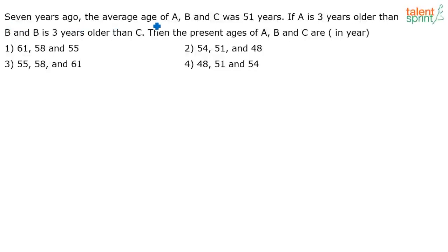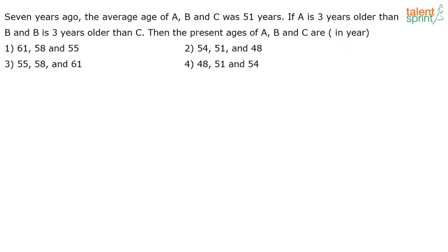7 years ago, the average age of A, B and C was 51 years. If A is 3 years older than B and B is 3 years older than C, then what are the present ages of A, B and C in years?